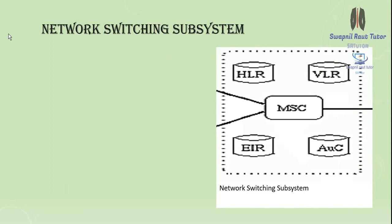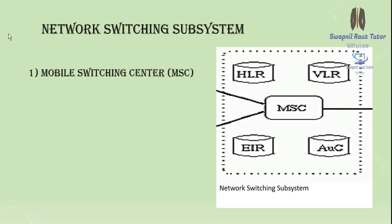The Network Switching Subsystem (NSS) contains the following functional units. The Mobile Switching Center (MSC) is the heart of the network — if a call request does not reach the MSC, it cannot connect. It manages communication between GSM and other networks, handles billing information, call setup, call routing, channel allocation, registration, default messages like 'user is busy,' location updating, and manages inter-BSC and inter-MSC call handoffs.